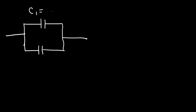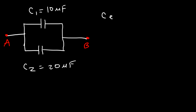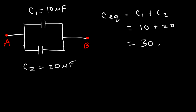Let's say the first capacitor has a value of 10 microfarads and the second capacitor has a value of 20 microfarads. What is the equivalent capacitance of this entire circuit, between points A and B? For capacitors in parallel, the equivalent capacitance is simply the sum of the capacitors — C1 plus C2. It's 10 plus 20, so it's 30 microfarads.